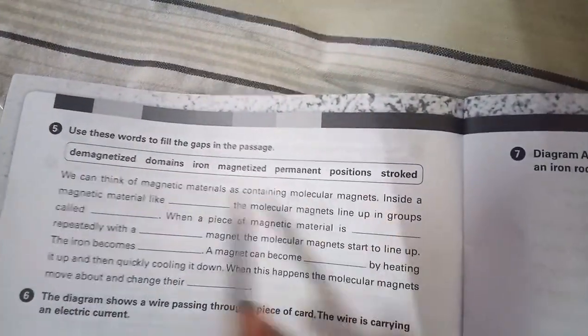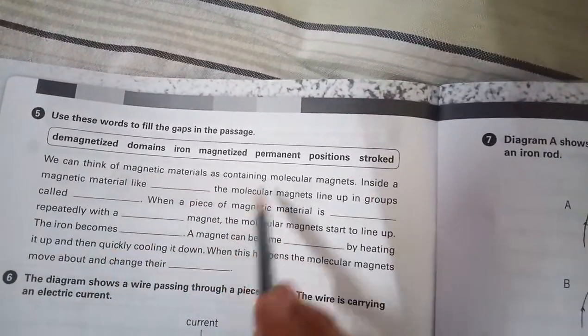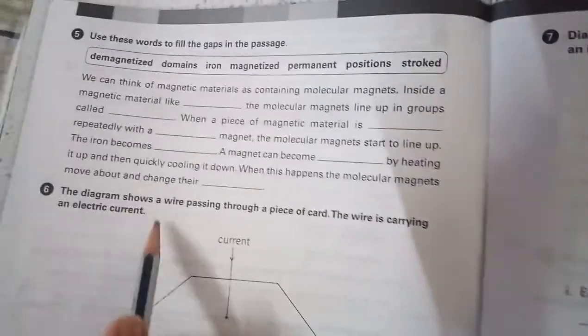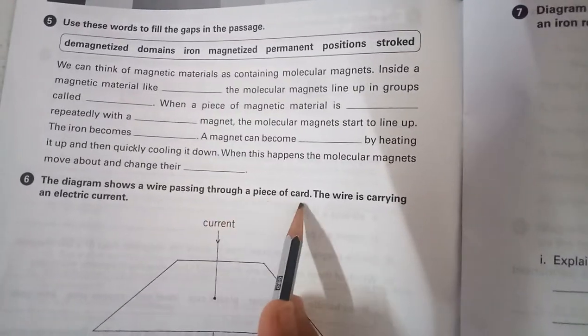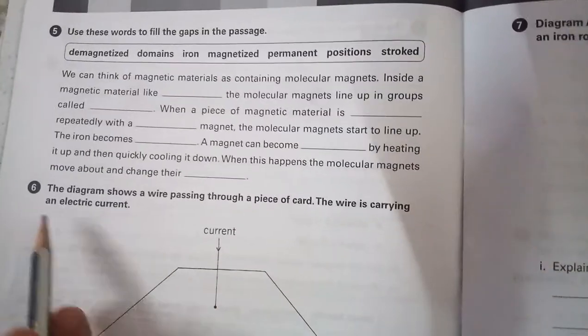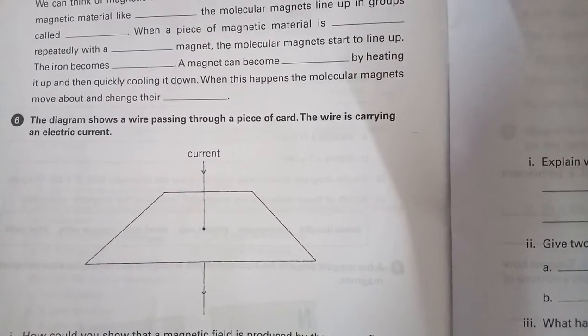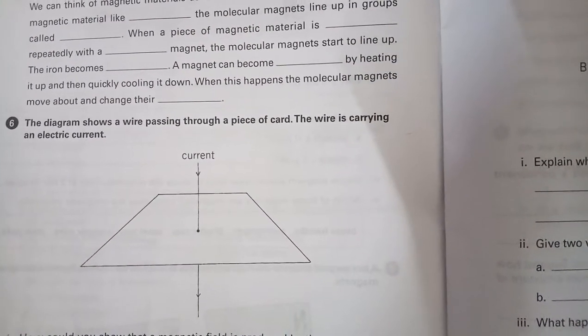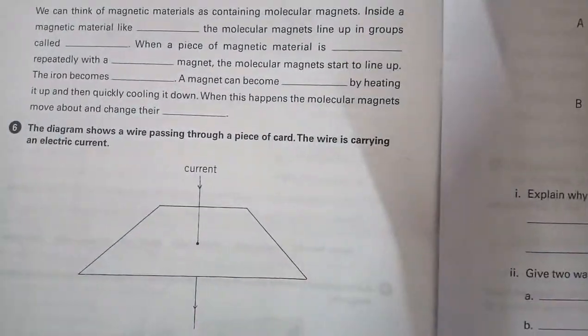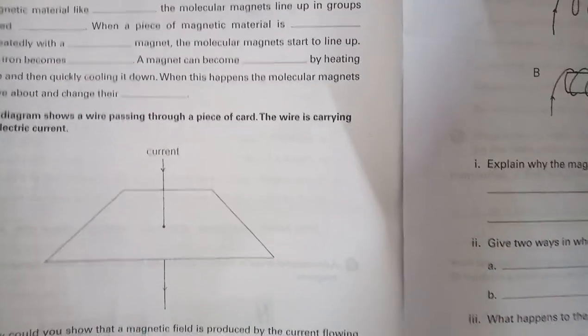Here are some words given, so you have to fill these blanks with the help of these given words. The diagram shows a wire passing through a piece of card. The wire is carrying an electric current. How would you show that a magnetic field is produced by current flowing in the wire? So you can read this experiment. You have to write the answer.